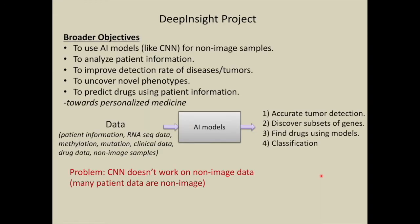Now let us see DeepInsight project. This is the broader objective of this project: to use AI models like CNN for non-image samples, to analyze patient information, to improve detection rate of diseases or tumors, to uncover novel phenotypes, and to predict drugs using patient information.